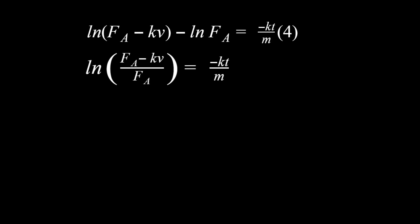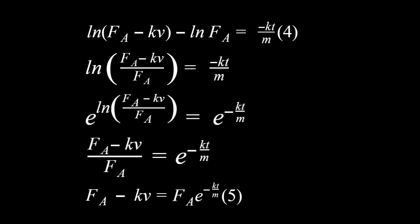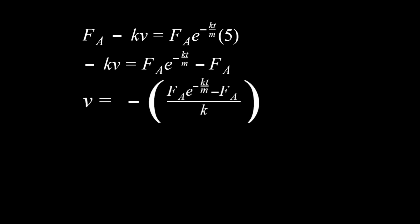We need to get rid of the natural log symbol to isolate v. To do that, we apply the exponential function e to both sides — e to the natural log cancel out — leaving (F_A minus kv) / F_A equals e to the power of minus kt/m. Now it's simple algebra: multiply both sides by F_A, then isolate the kv term. Dividing gives v equals (F_A minus F_A times e^(minus kt/m)) / k.